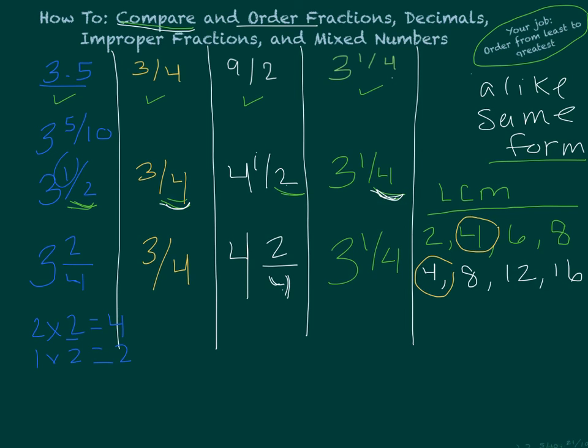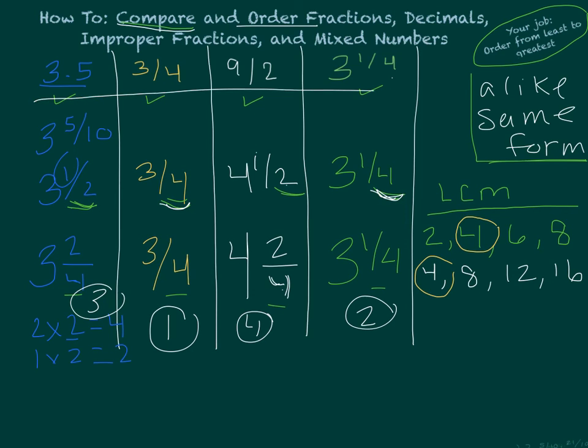Now, everything is looking alike. It's in the same form. All of our denominators have 4. We're in fractions, so we're good to go. Let's order them now. The smallest one would be 3 fourths. The next one would be 3 and 1 fourths. The next one would be 3 and 2 fourths. And the final one would be 4 and 2 fourths. That would be the biggest one. Now, remember, we are actually ordering these numbers, though, so if we just follow our lines up, we would write 3 fourths, followed by 3 and 1 fourths, and then 3 and 5 tenths, and then 9 halves.